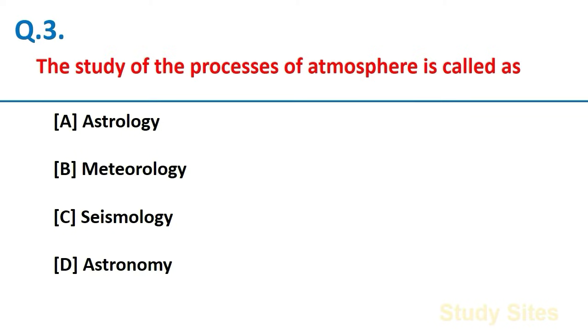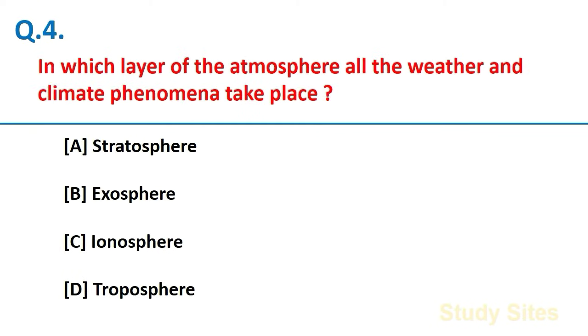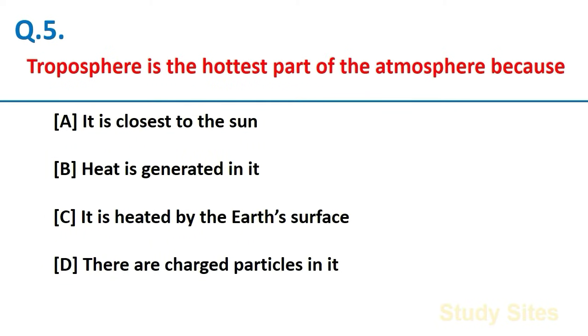The study of the processes of atmosphere is called Meteorology. In which layer of the atmosphere all the weather and climate phenomena take place? Troposphere. Troposphere is the hottest part of the atmosphere because it is heated by the Earth's surface.